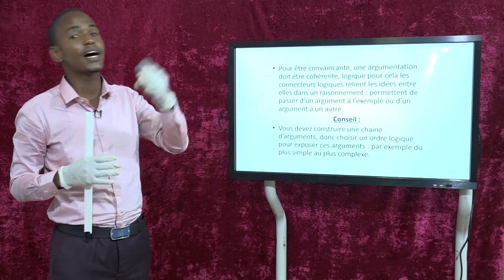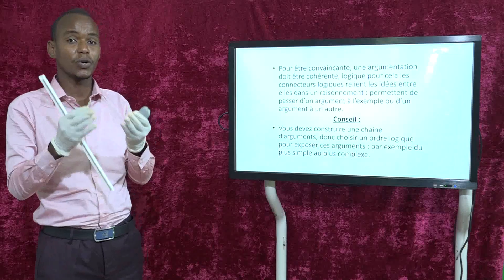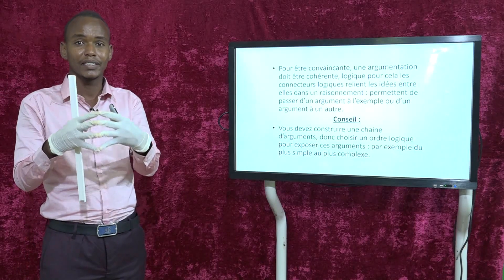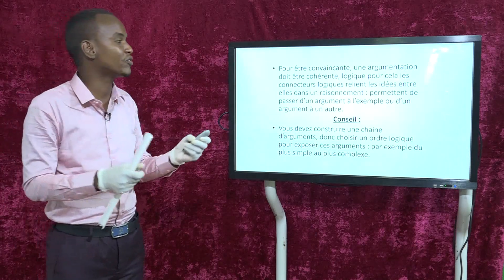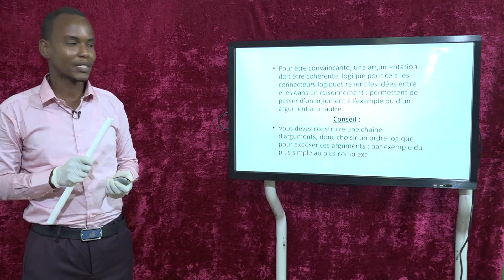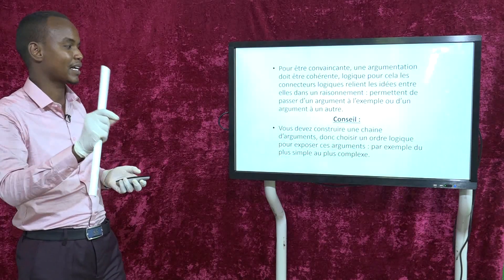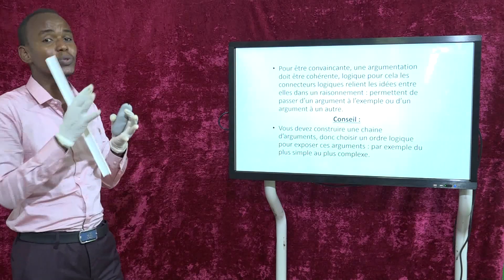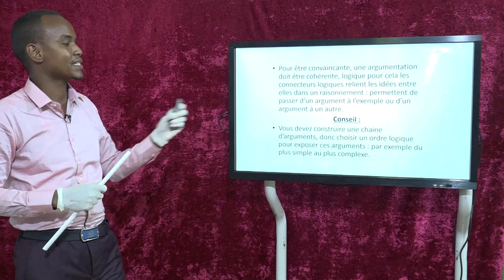Les connecteurs logiques permettent de passer d'un argument à un exemple ou d'un argument à un autre. Leur rôle c'est de classer, d'organiser et d'ordonner les arguments du moins important au plus important afin de mieux convaincre l'interlocuteur. Le conseil est de construire une chaîne d'arguments bien classés et de choisir un ordre logique.